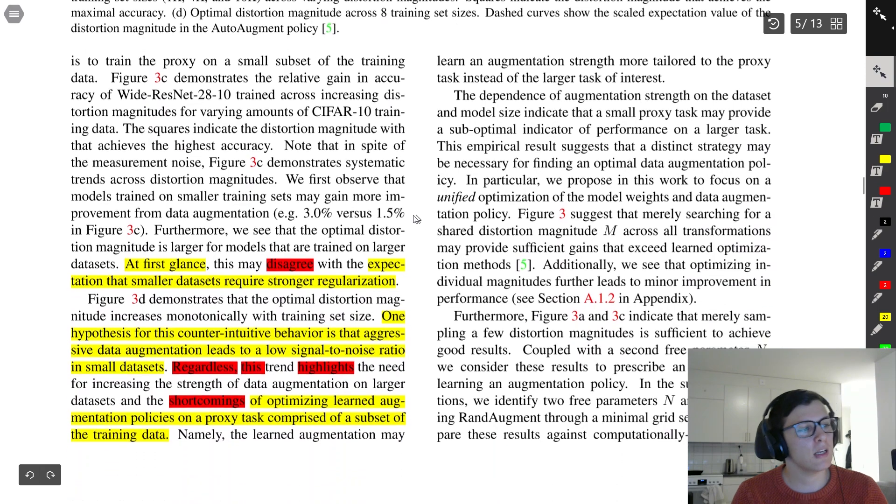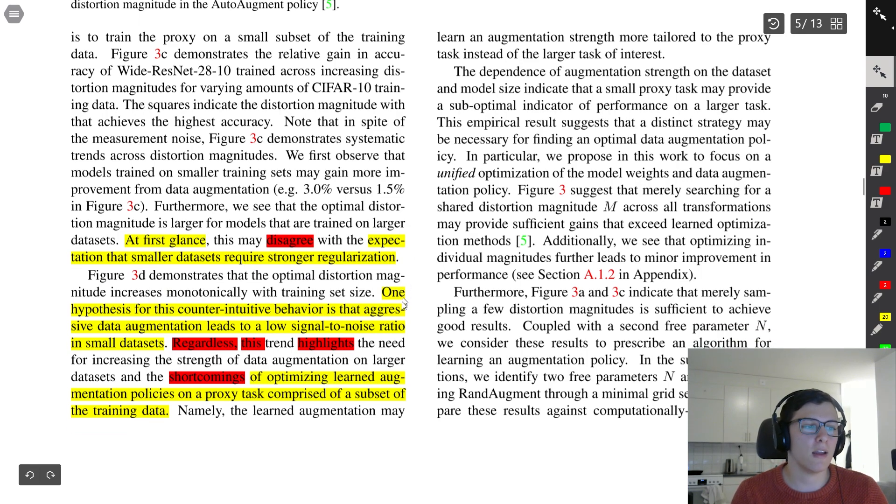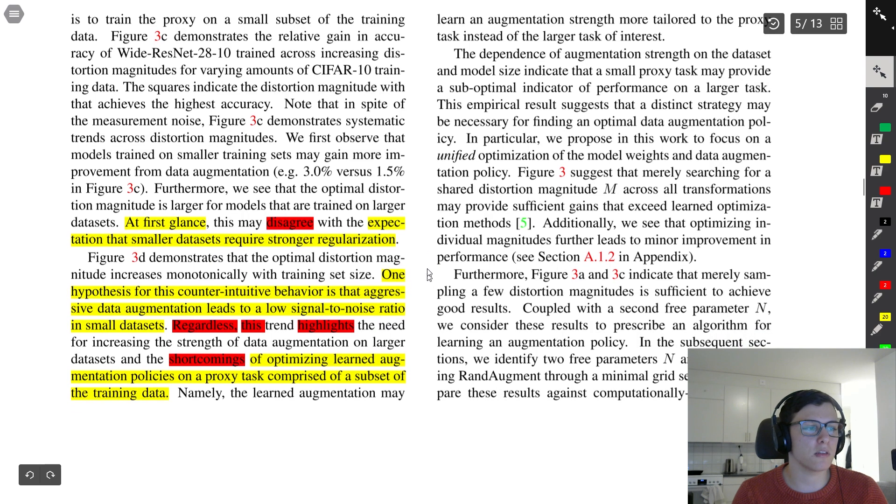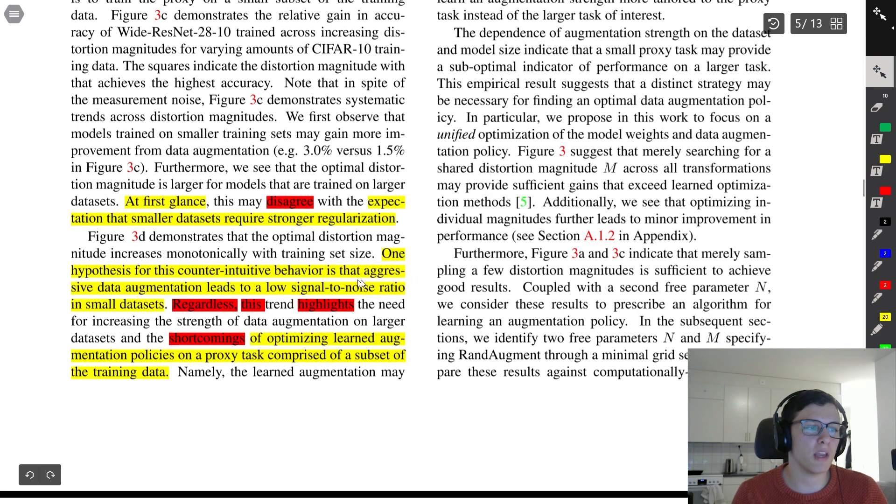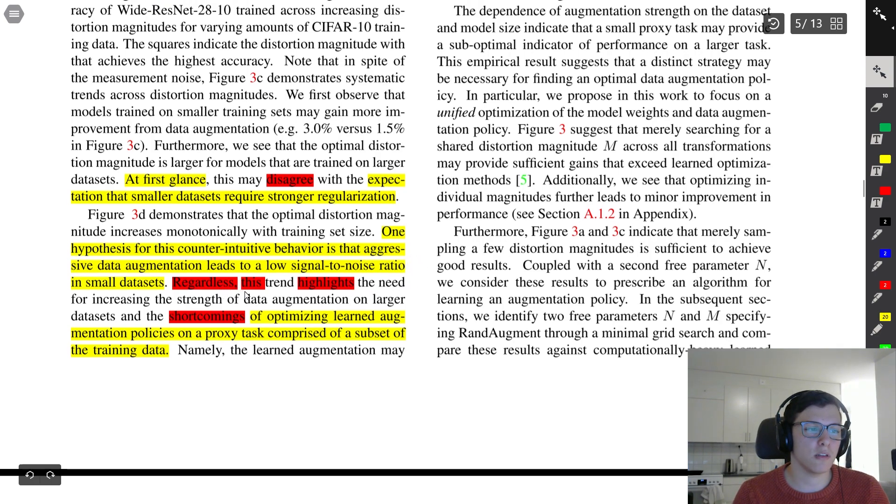This disagrees with the expectation that smaller datasets require stronger regularization. They have a hypothesis for this counterintuitive behavior: that aggressive data augmentation leads to a low signal-to-noise ratio in small datasets, so essentially the model is adapting to noise rather than learning the inherent structure of the data. Regardless, this highlights what they wanted to demonstrate.